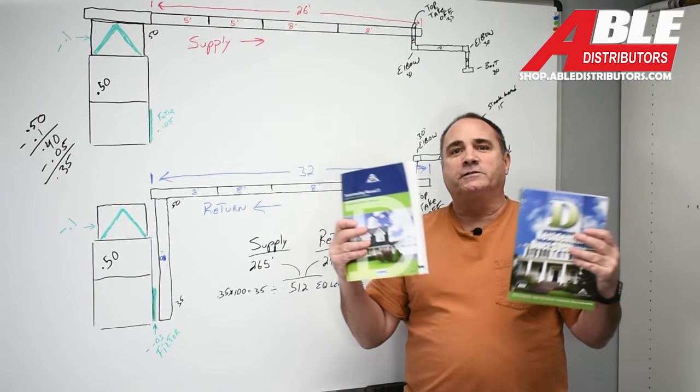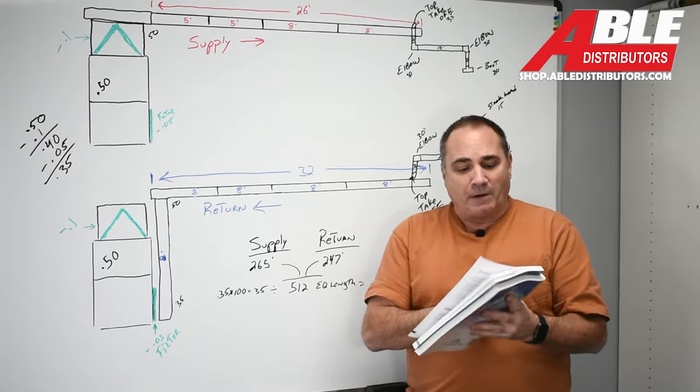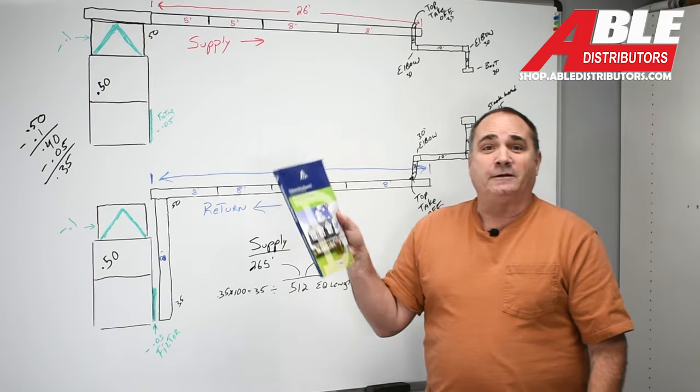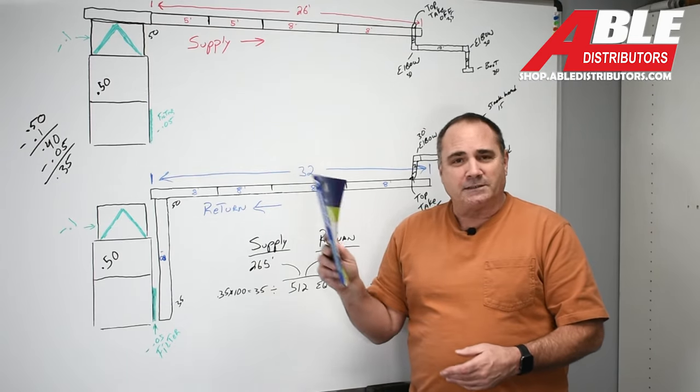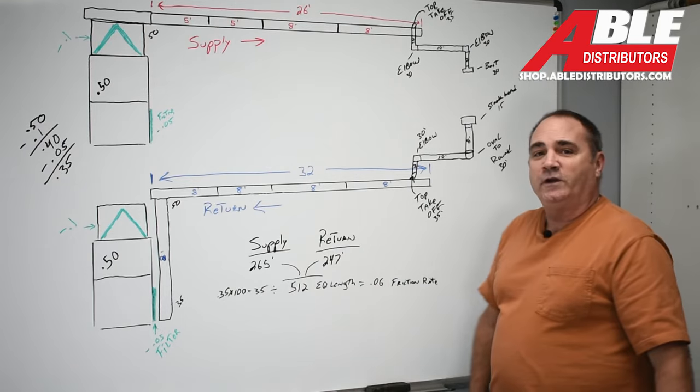So that's what I wanted to do today. This is how you get the friction rate that you're going to use on your ductulator. Again, these books are amazing. If you've got a little bit of a budget for books, I would buy them both. Understanding the manual D, I wish I knew this book was around 8 years ago, because honestly, it's a pretty nice read.